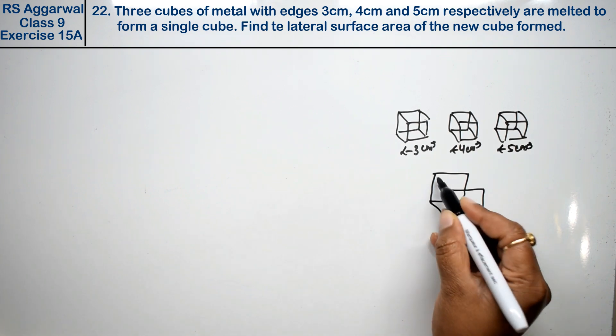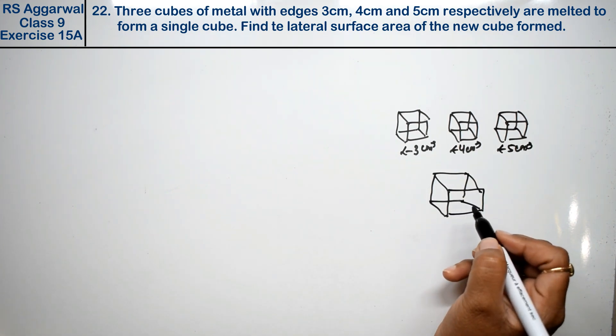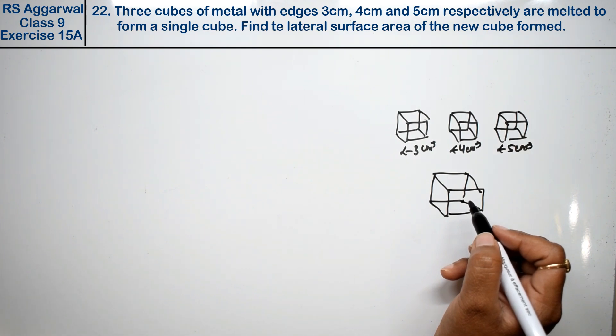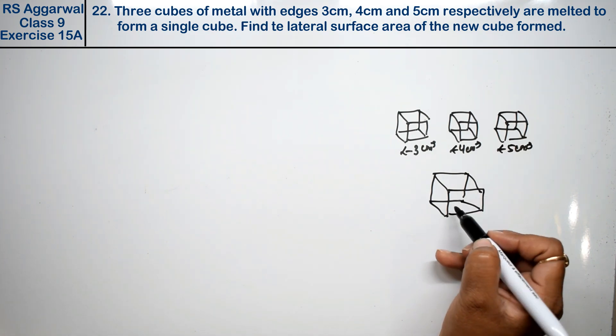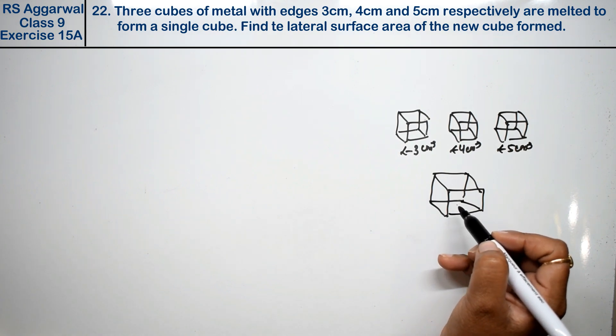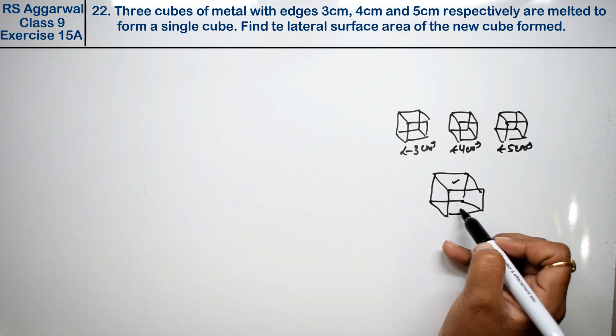We are saying that three cubes are melted to form a single cube. Find the lateral surface area of the new cube formed. In lateral surface area we will not include the top and bottom.